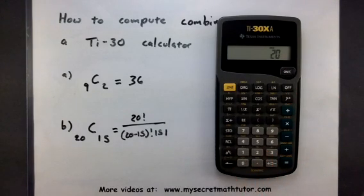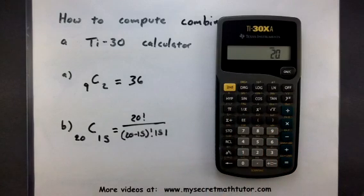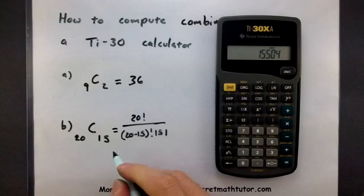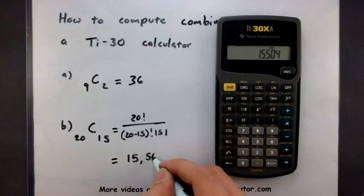So, 20 is the first number, second combination, 15 equals. And this will give you an answer of 15,504.